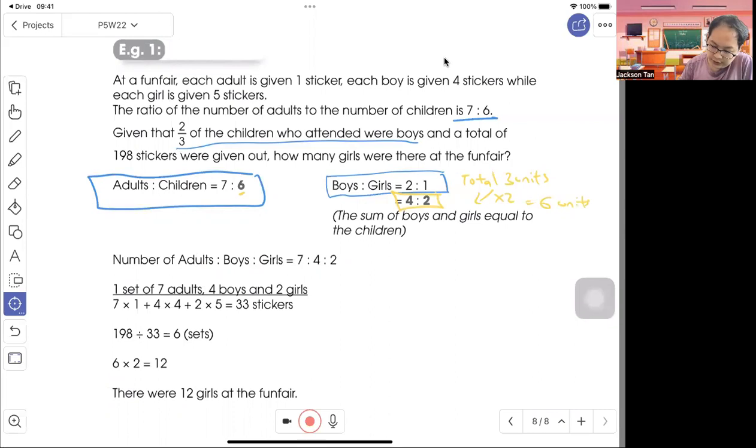1 set itself will have 7 times 1, which is 1 sticker. Boy will be 4 times 4, which is 16 stickers. Girl will be 2 times 5, which is 10. Total 33 stickers in 1 set.